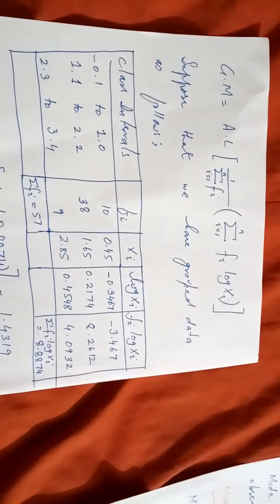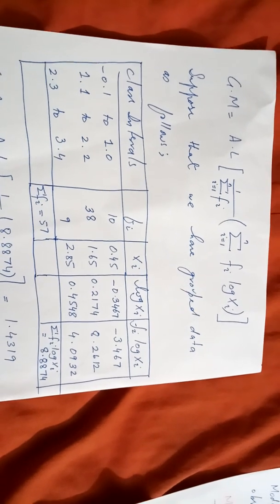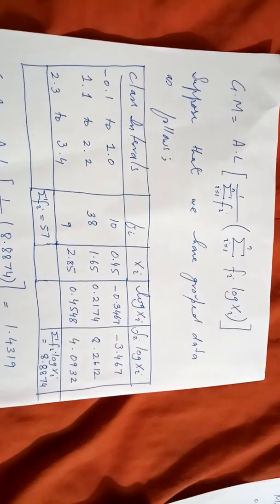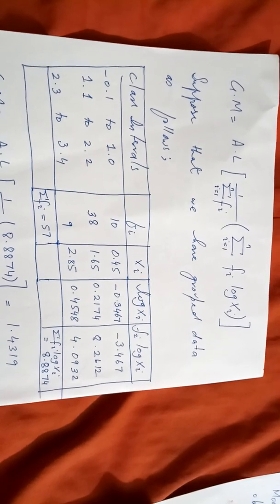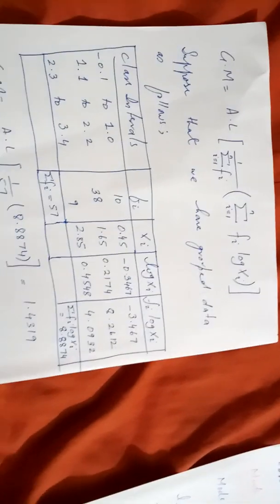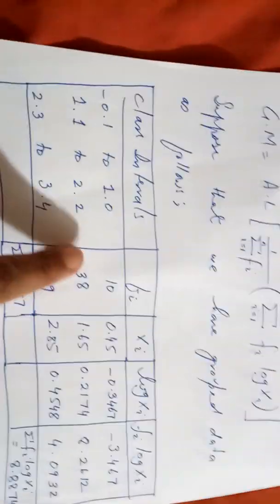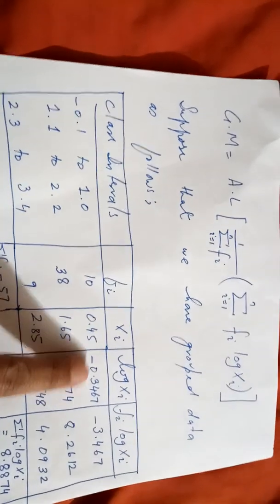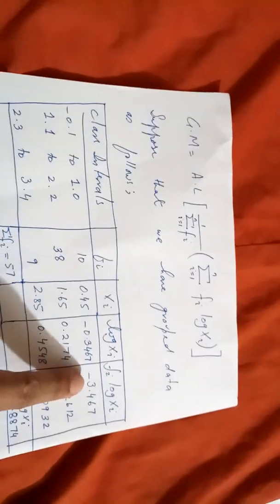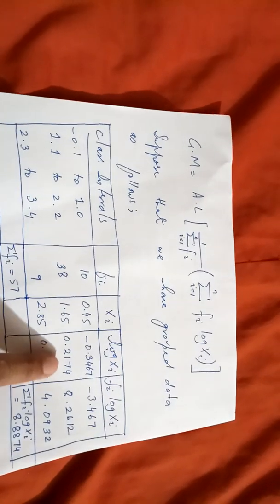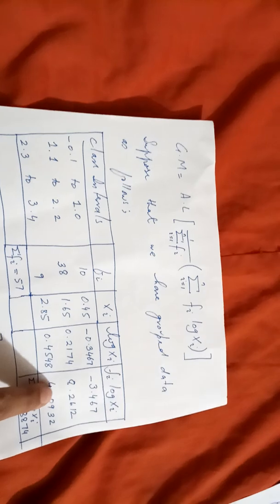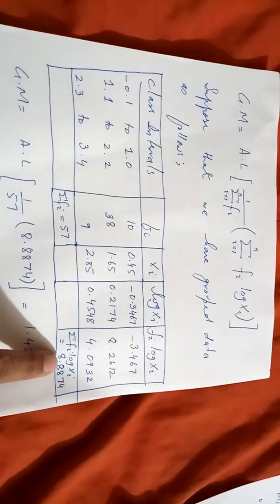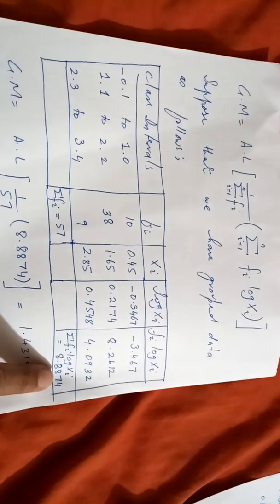From the exam point of view, which inshallah I believe will be conducted on time, and let's all stay positive during this pandemic and just kick away all the stress. Anyway, so multiplying the fi, 10 by log of xi, I get this column. 38 multiplied by 0.2174 I get this value, and then I add all these values and it comes out to be 8.8874.